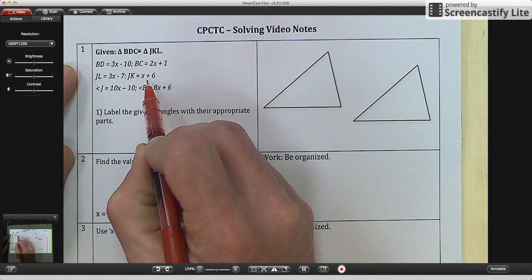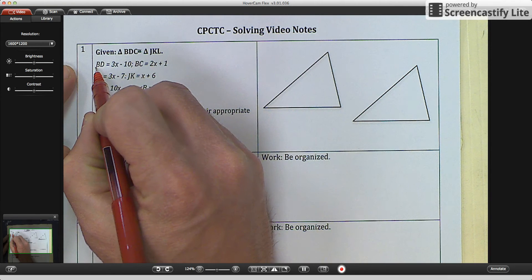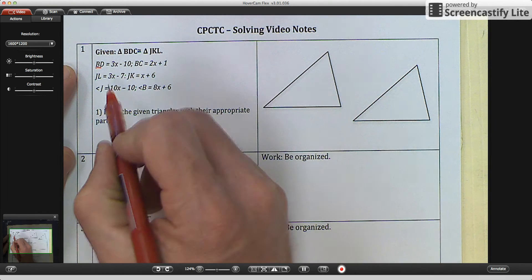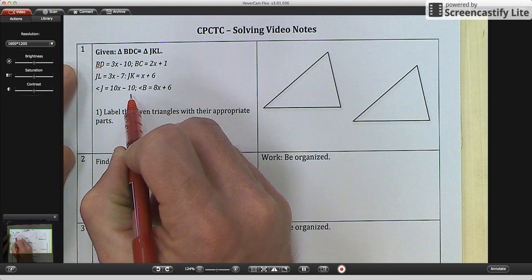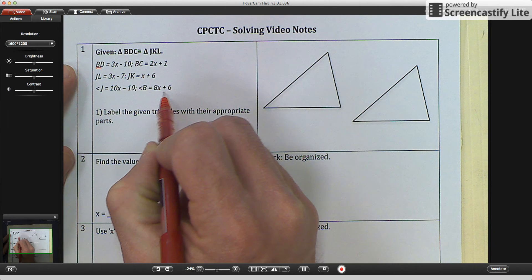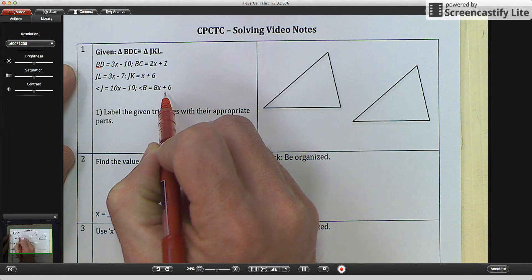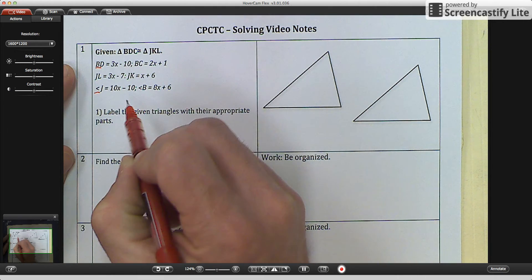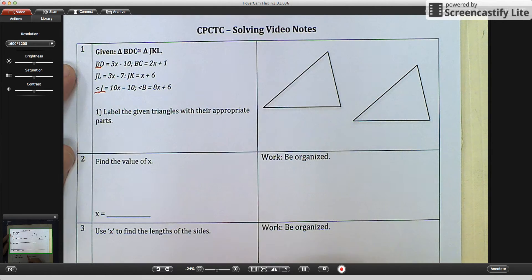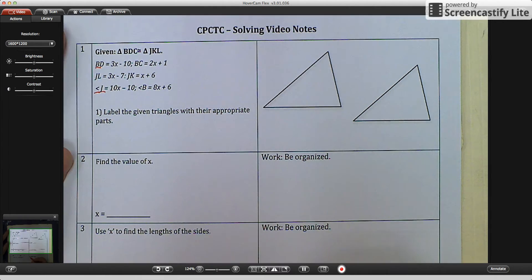Now we know that they are side lengths because they have two letters attached to them. Then we have angle J equals 10X minus 10, and angle B equals 8X plus 6. We know that these are angles because it says angle, and then it's one letter. And angles can be written as one letter or three letters.